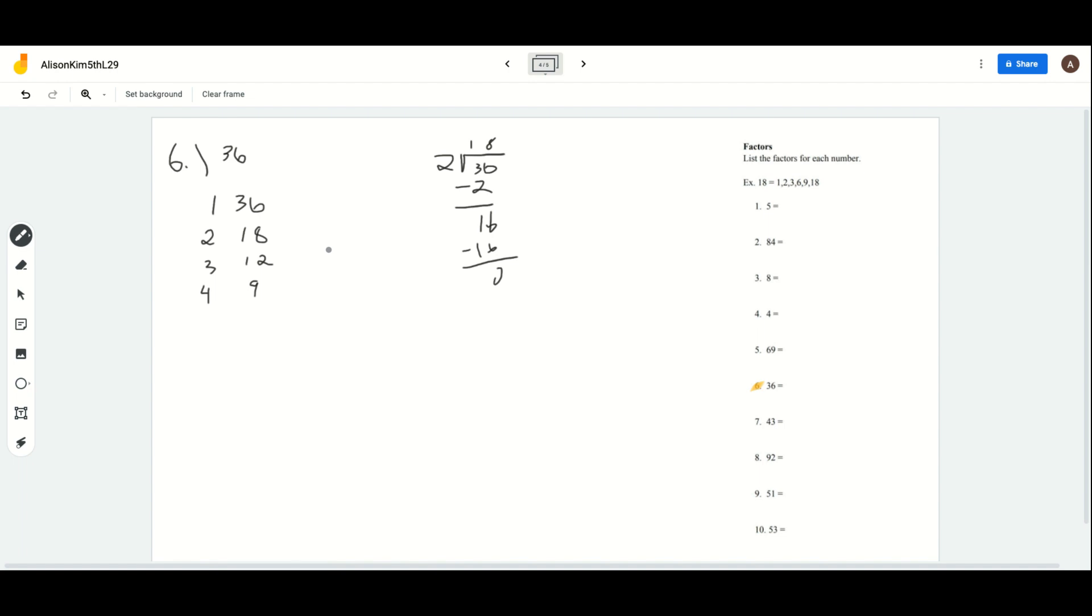Now let's move on to 5. We know that 5 cannot go into 36 because 5 times any number either gives you the last digit as a 5 or a 0, and 6 is neither. So 5 does not go in. Now let's try 6. We know that 6 goes into 36 because 6 can go into 6, right? And we know that 6 times 6 equals 36.